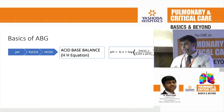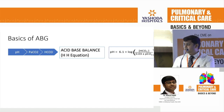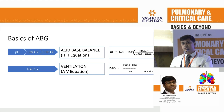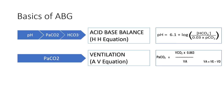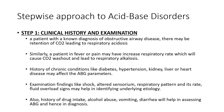ABG basics are divided into three parts: the acid-base balance calculated by the Henderson-Hasselbalch equation using pH, pCO2, and bicarbonate; the ventilation part using the pCO2 value; and oxygenation values using the alveolar gas equation calculated by pCO2, pO2, and oxygen saturation. Among these four parameters is your step-wise approach to acid-base disorders.